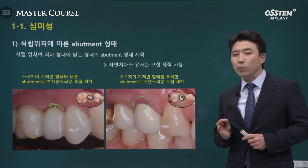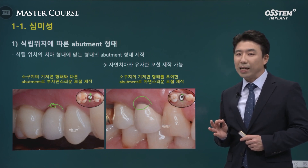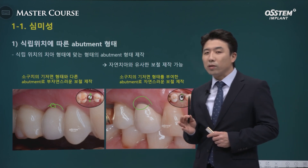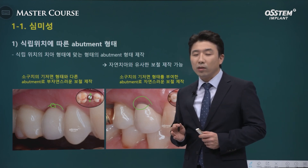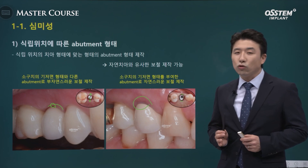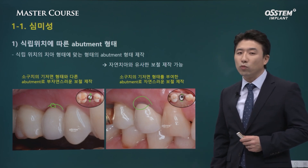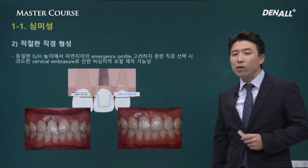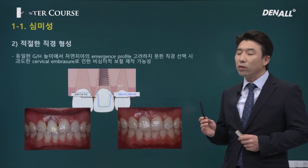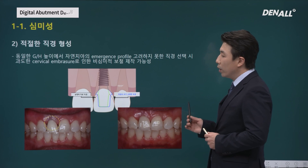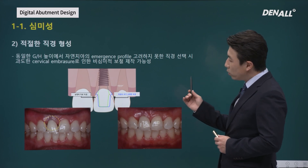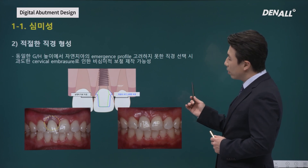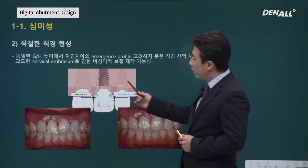The abutment needs to have its basic shape nicely established. This is important in relation to the contour of the tooth. It is the same for mesiodistal width as well.